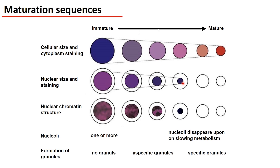Later on, in certain cells, this nucleus is lost, and we do not have any nucleated cells when we have a mature cell. The chromatin structure is very important. At the beginning, when we have to multiply the DNA, we have to unwind the chromosomes, so we do have a very homogeneous chromatin structure. As the division is slowing down and stops, the chromatin is getting more dense. Similarly, the nucleoli inside the nucleus are visible at the beginning in the blast phase, and they are very important to regulate the division. However, when the division is shutting down, the nucleoli are almost invisible and they disappear upon slowing of the metabolism.